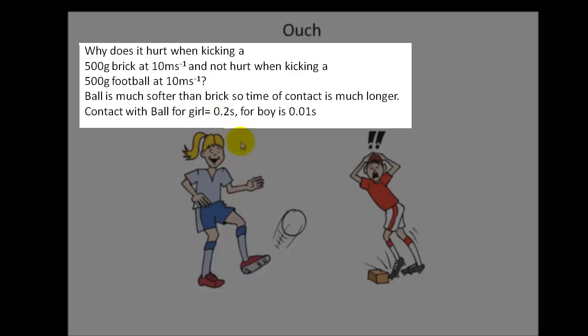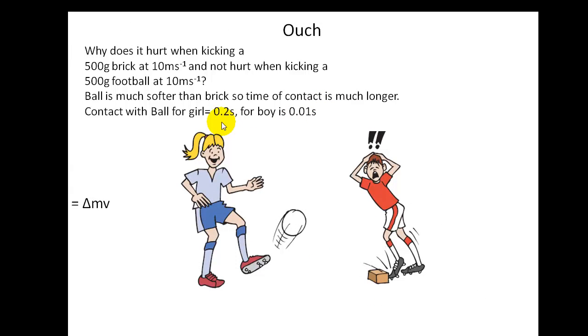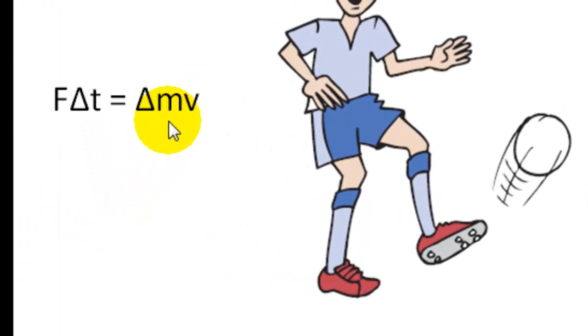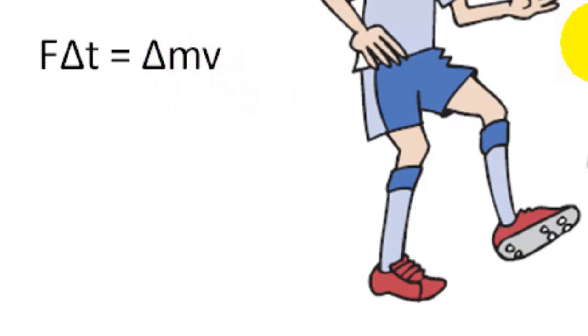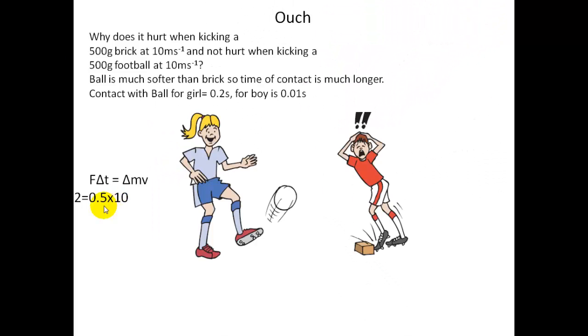Now when she kicks the ball there is a longer time of contact. When he kicks the ball, the time of contact is only 0.01 seconds, with her at 0.2 seconds. So what we are going to look at is the impulse is equal to the momentum change. The momentum change will be the same in both cases because both have the same mass and the same change of velocity. Because it starts at 0 and ends up at 10. But F∆t, which will be the same value, if you have different values of ∆t, you will have different values of F. So let's put these values in.